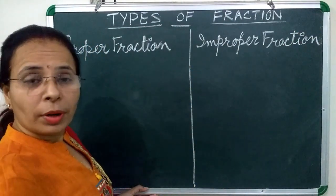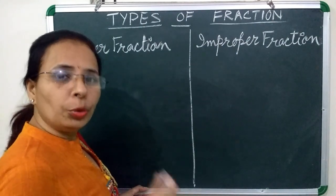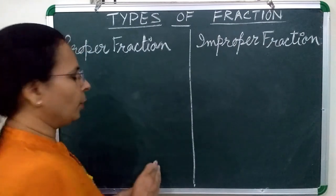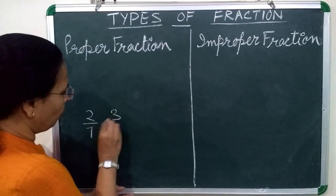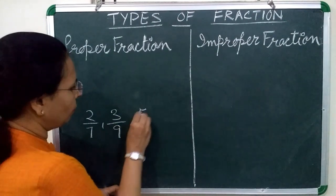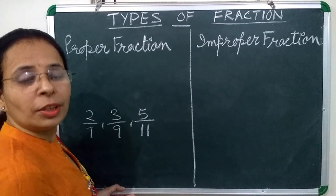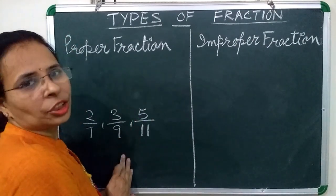Proper fraction are those fraction in which numerator is less than denominator. For example, 2 upon 7, 3 upon 9, 5 upon 11. These are proper fraction because their numerators are less than denominator.